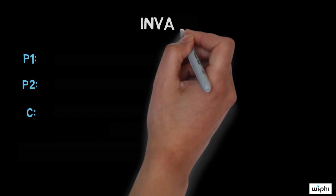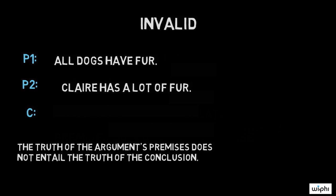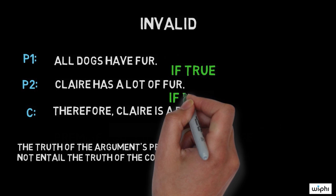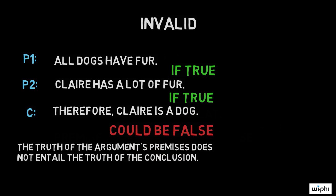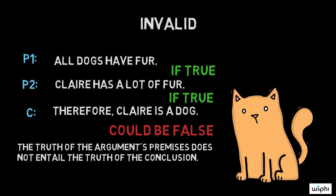Note now what it means for an argument to be invalid. The truth of the argument's premises does not entail the truth of the conclusion. For instance, P1: All dogs have fur. P2: Claire has a lot of fur. Conclusion: Therefore, Claire is a dog. Now, it could be the case that all of the premises in this argument are true, but the conclusion false. The truth of this conclusion, in other words, does not follow from the premises, right? Because cats also have a lot of fur. So this is an invalid argument.